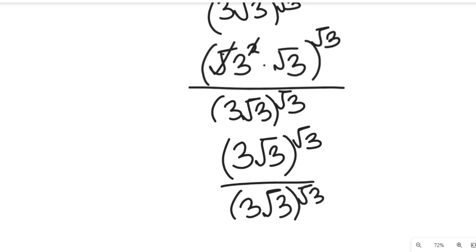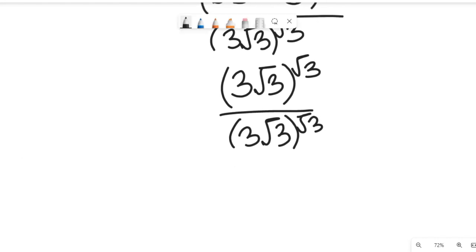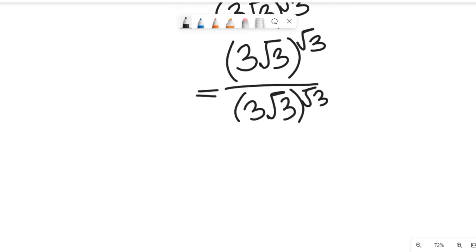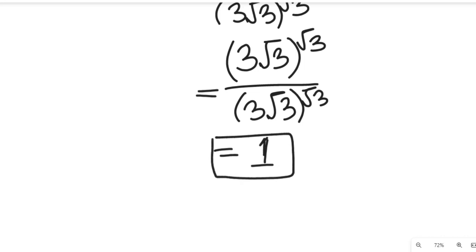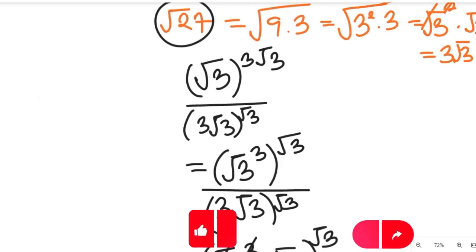So what do you see in this equation? You'll come to see that the denominator is equal to the numerator, so we can cancel them. Our final solution will be: this divided by this equals 1. So the value of 1 is our final solution.